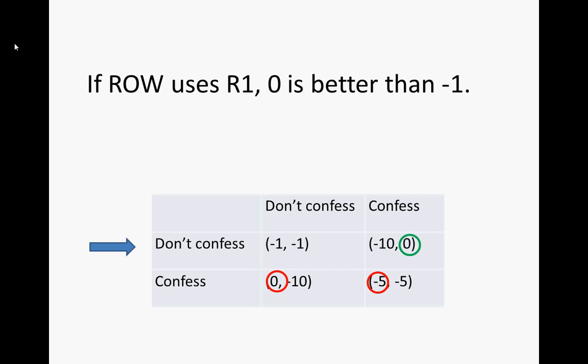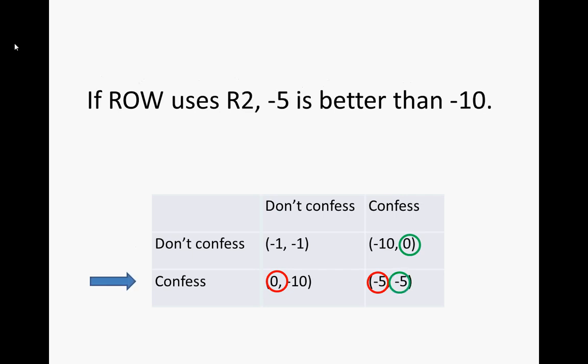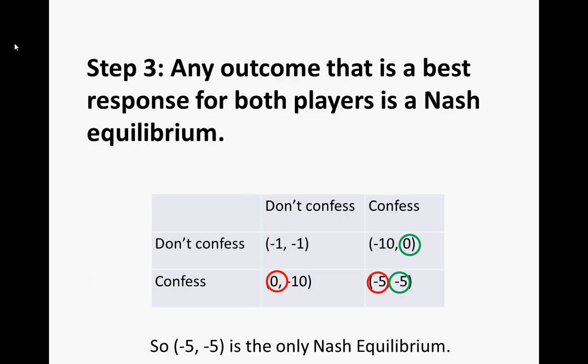If Row uses R2, Column's payoffs are negative 10 or negative 5. The better one is negative 5. The final step: any outcome that's a best response for both players is a Nash equilibrium.